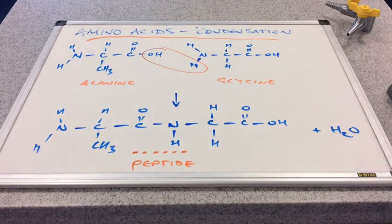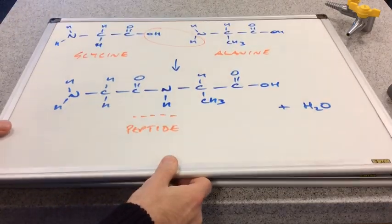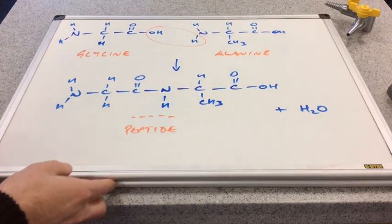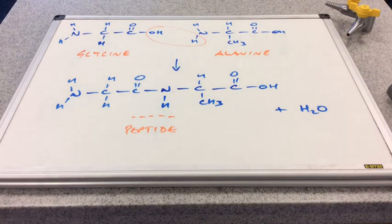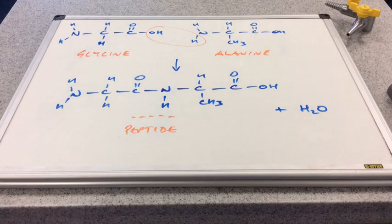Now I could have easily done that the other way around and taken the hydroxyl group from the glycine molecule instead and the hydrogen from the alanine. And that would have given me this di-peptide molecule which is actually different to the previous one.